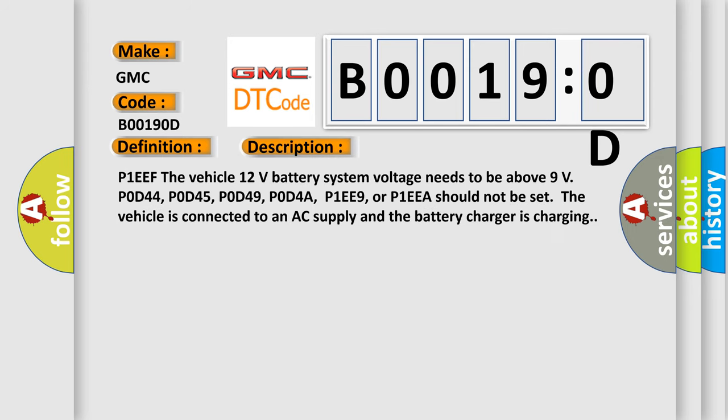The vehicle 12 volts battery system voltage needs to be above 9 volts. Codes P1EEF, POD44, POD45, POD49, POD4A, P1EE9, or P1EEA should not be set. The vehicle is connected to an AC supply and the battery charger is charging.